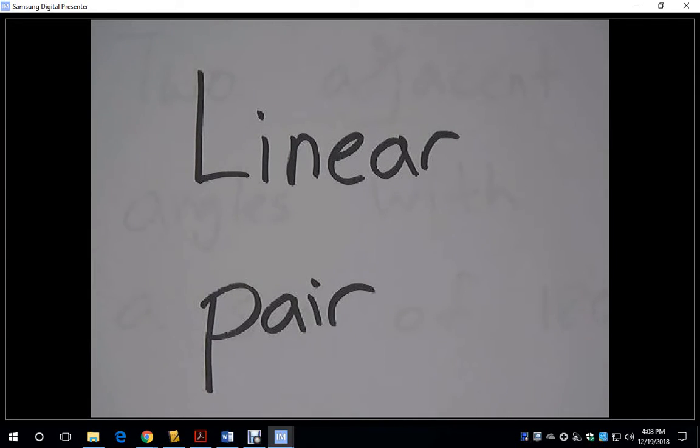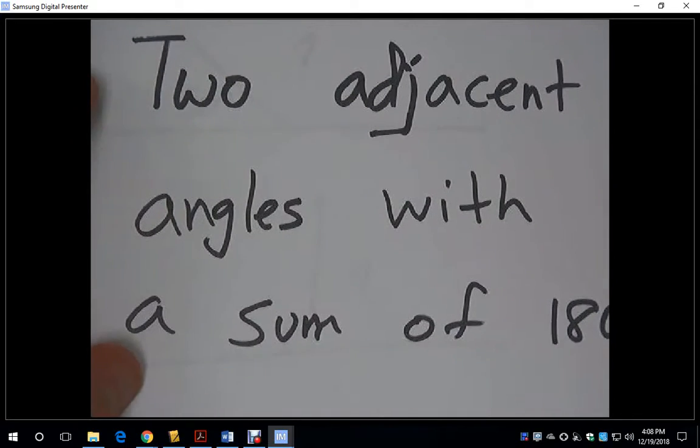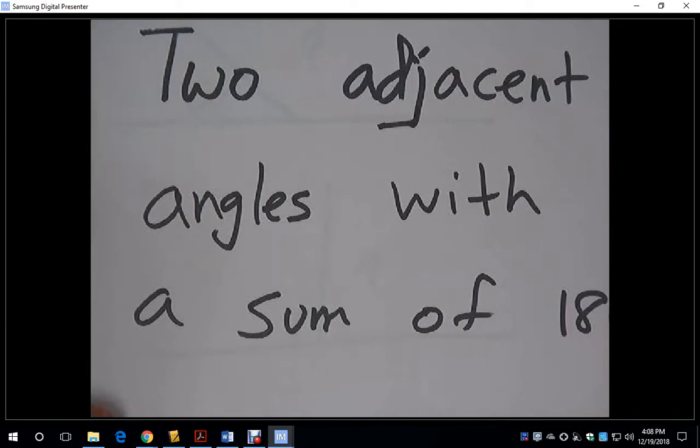The following video covers the concept of a linear pair. In geometry, a linear pair is two adjacent angles with a sum of 180 degrees.